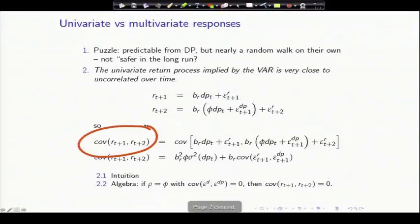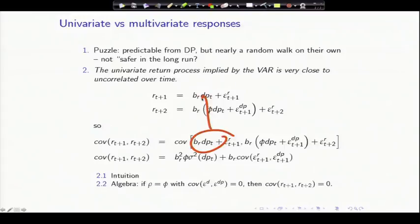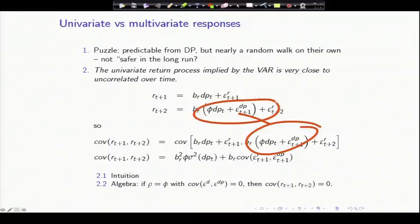And now I can work out what is the autocorrelation of returns. Do returns have some negative autocorrelation induced by dividend yield forecasts or not? Well, this is just a little bit of algebra. What is it? RT plus 1. That's my RT plus 1. That's the first equation. My RT plus 2. That is simply this thing here. So what I have to do is work out the correlation, the covariance, between those two terms. What is it?